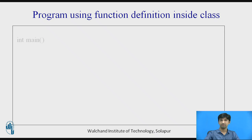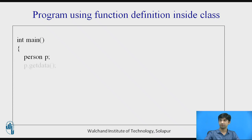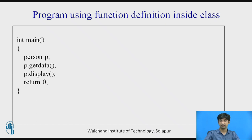After the class, we have the main function: 'int main'. Int will return type 0. I create an object: 'Person p' — where Person is the class name and p is the object. To access functions, I use the object dot function name syntax. So 'p.getData()' gets input from the user, and 'p.display()' displays the data on the screen. Then return 0. This is how you write a simple C++ program using function definition inside the class.